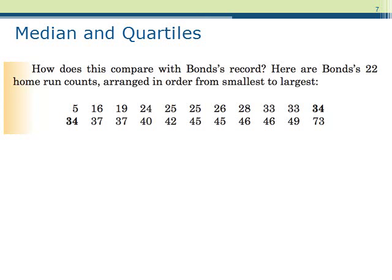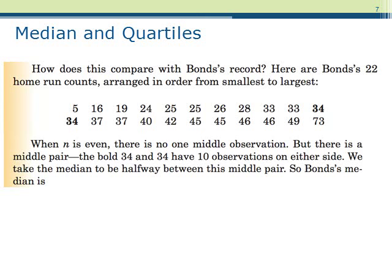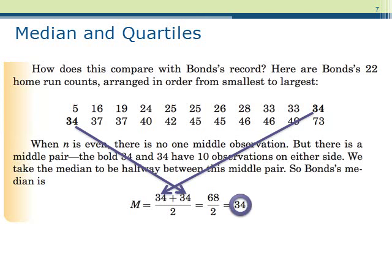Let's see how this compares to the home run counts for Barry Bonds over 22 seasons. Again, we begin by arranging the observations from smallest to largest. In this case, n is even, so the median will be the average of the two center observations. In this case, they are both 34, so their average is also 34.